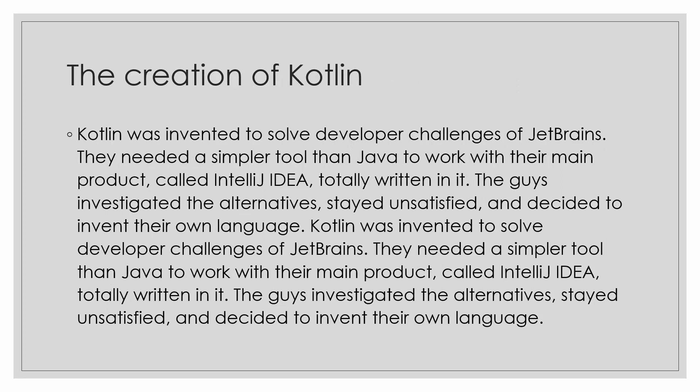So why was Kotlin created? As you may have seen in a previous video, in 2019 Kotlin was made the official language for Android app development. Kotlin was invented to solve a developer challenge at JetBrains — they needed a simpler tool than Java to work with their main product, IntelliJ IDEA, which was totally written in Java. They investigated the alternatives, were unsatisfied, and decided to invent their own language. Android apps were originally made in C++, then moved to Java, but Java code was very redundant and had many problems, so JetBrains invented Kotlin.